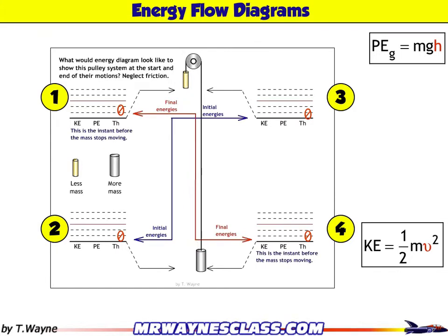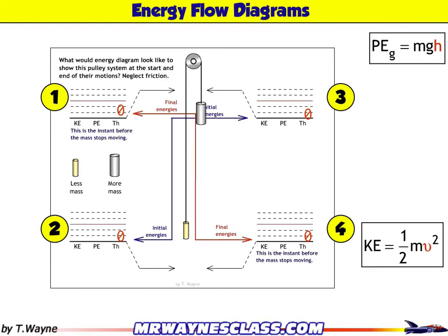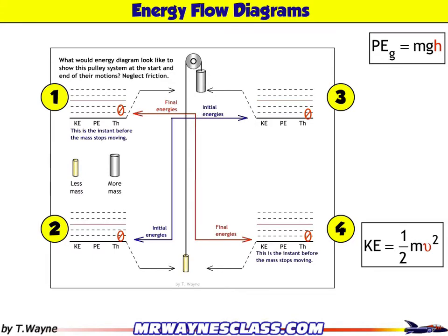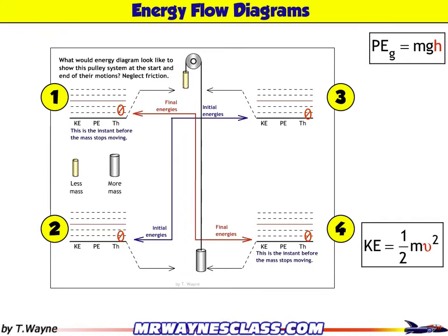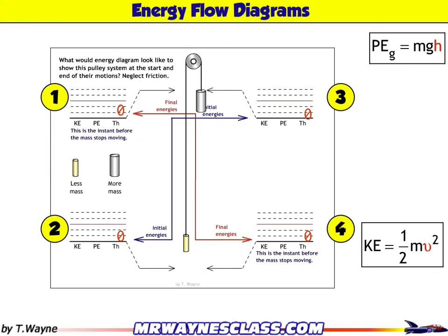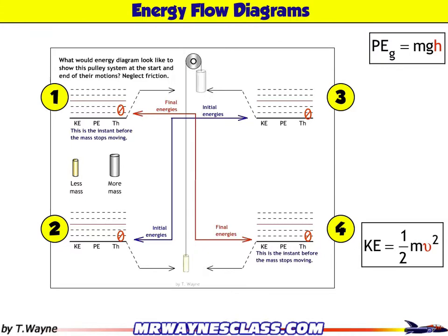Let's take a look at these. If I look at the very beginning, those are the initial energies at position three and position two. At position two, nothing's really happening. But at position three, I'm at the maximum height, so position three is where all the energy for the system is stored. Remember, the system is the silver weight, the gold weight, and the earth — so that's where all the energy is going to be stored.